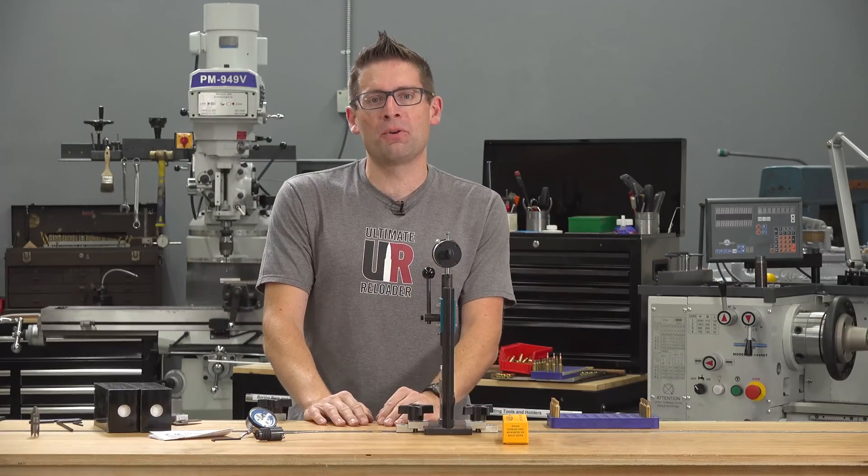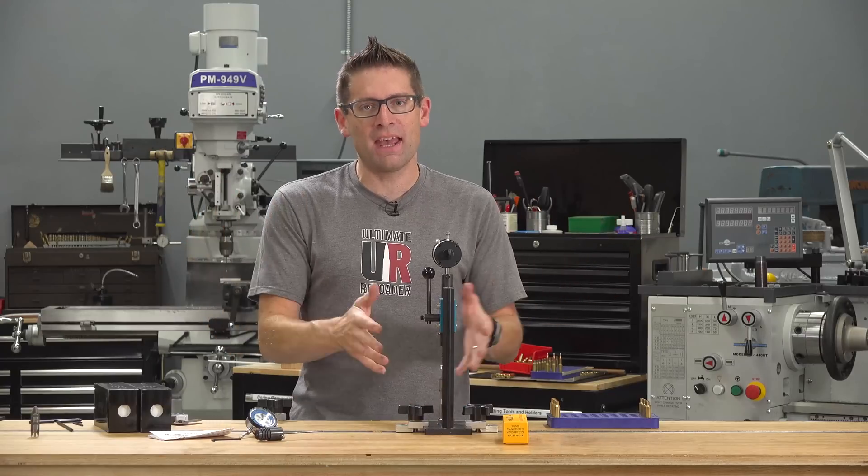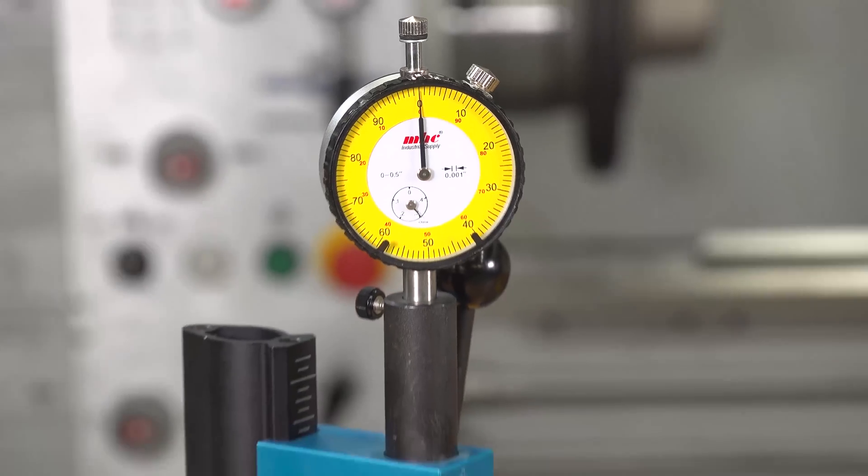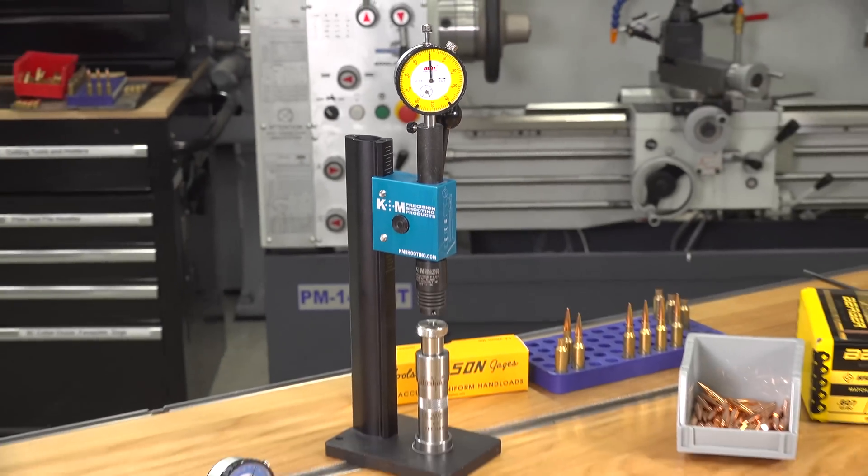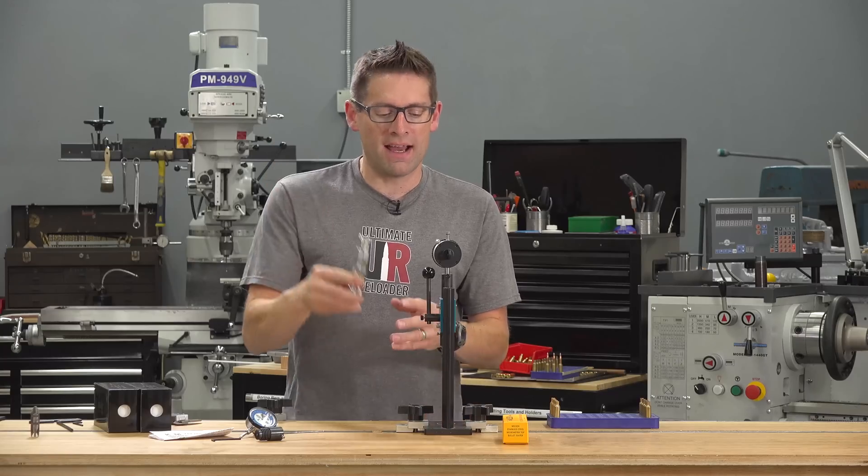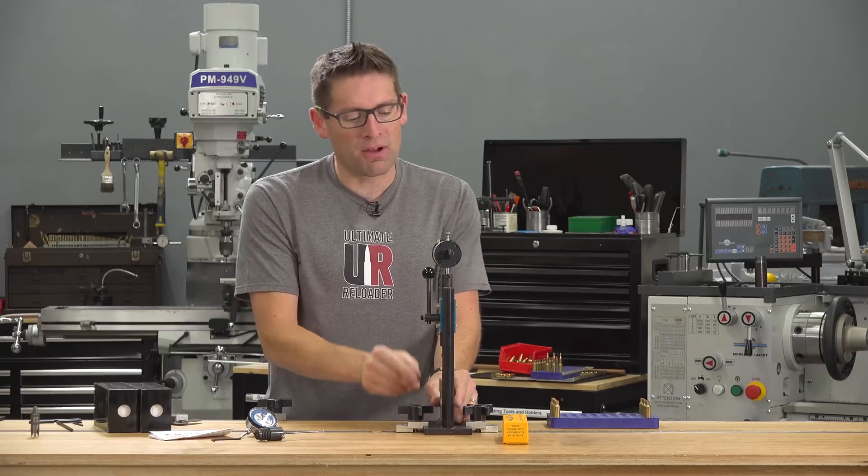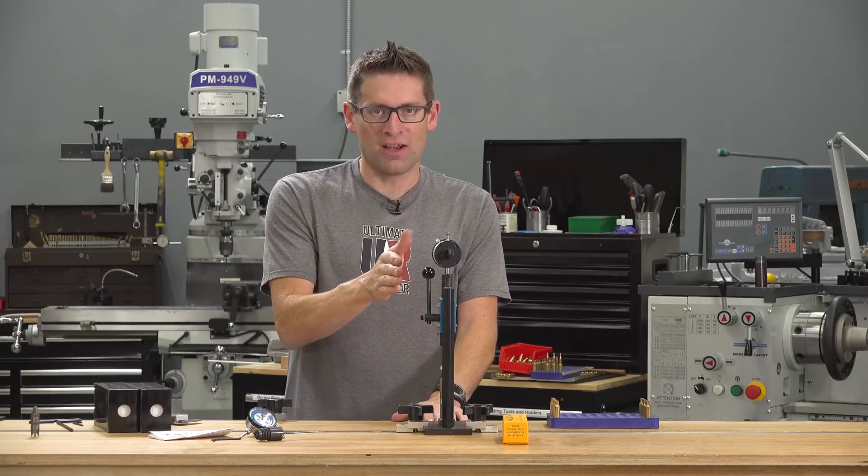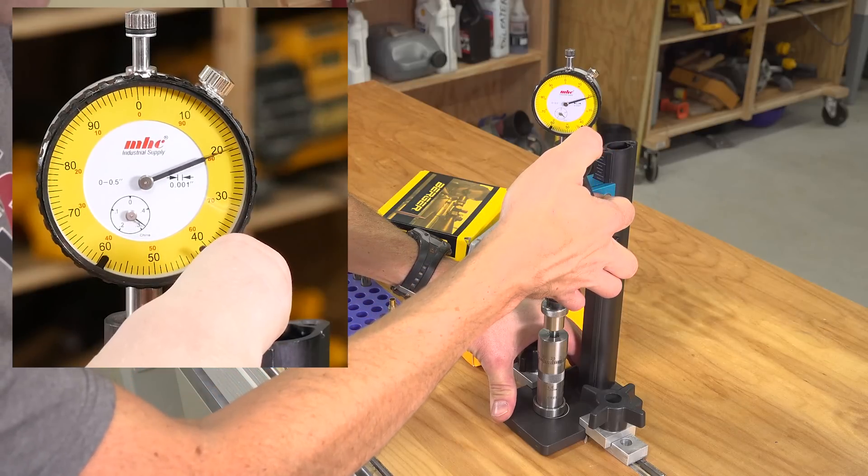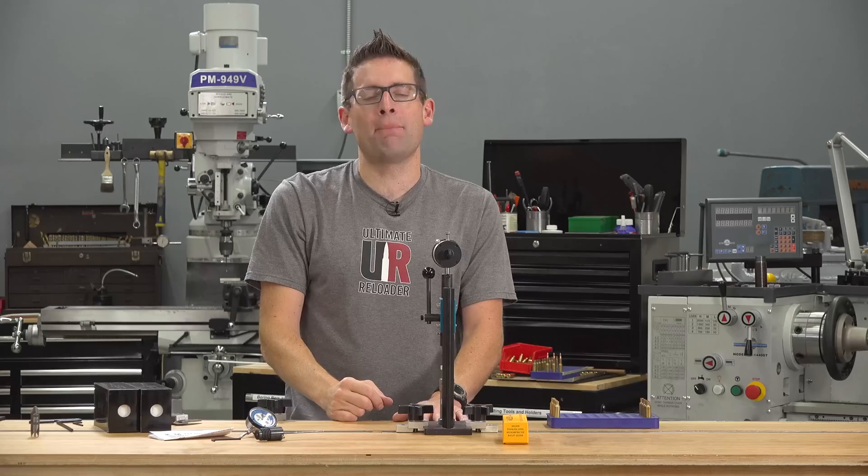Gavin Gu here from Ultimate Reloader.com. I'm talking about the K&M Precision Bullet Seating Arbor Press with Force Pack. That's right. If you're using something like the Ellie Wilson inline chamber seating die while you're seating bullets with the K&M Precision Arbor Press, you can actually see the pounds force of bullet seating as it's happening.